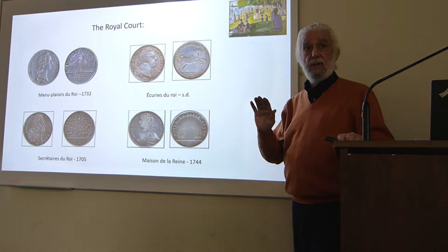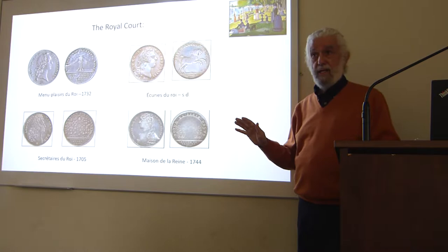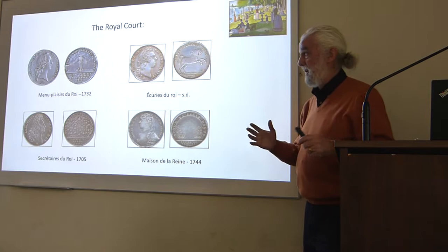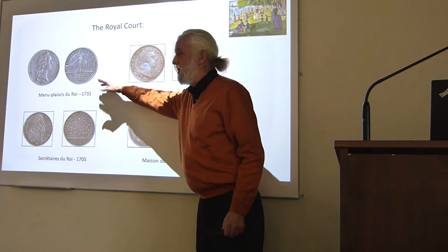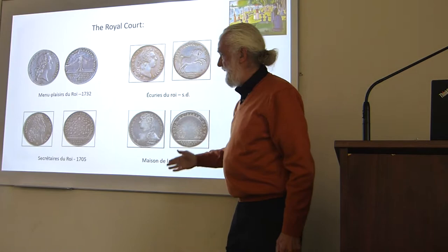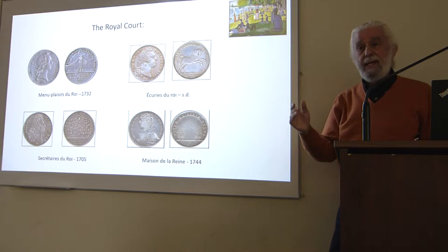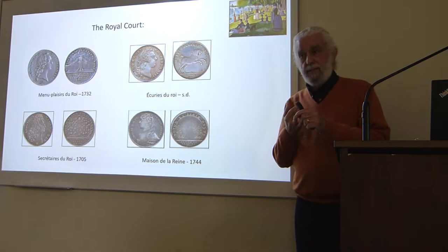The royal court under Louis XIV onward is a very different — huge bureaucratic — organization than it was in the 13th and 14th century. Each little department developed these jetons: the king's small pleasures for his perfume and his violins, the king's stables, the king's secretaries, the queen's household. They're used to keep accounts and as perks of office for office holders.